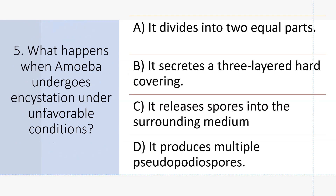What happens when amoeba undergoes encystment under unfavorable conditions? Answer B: It secretes a three-layered hard covering.